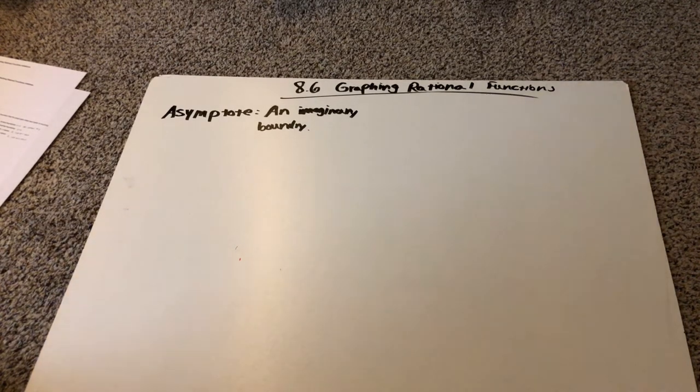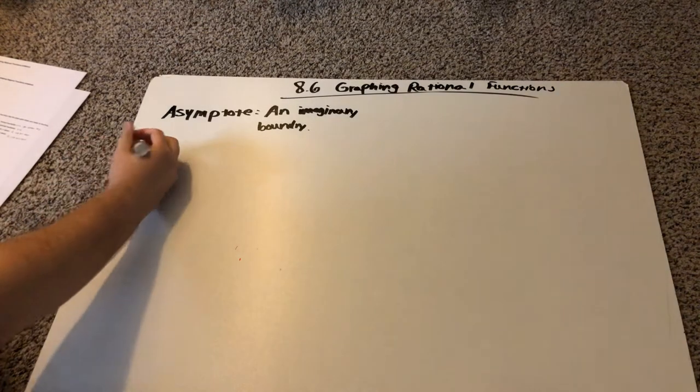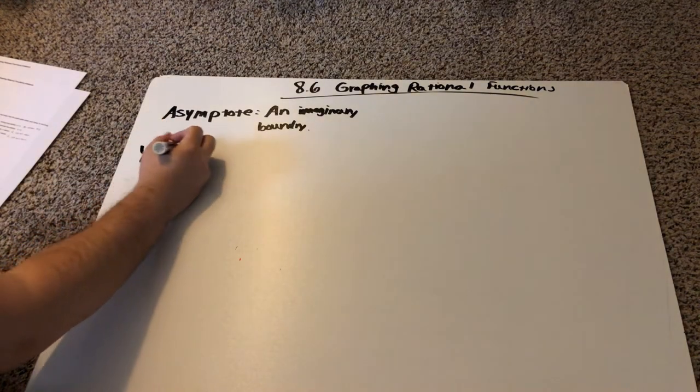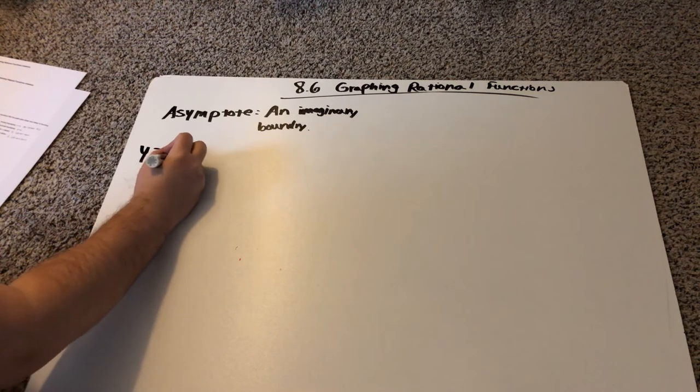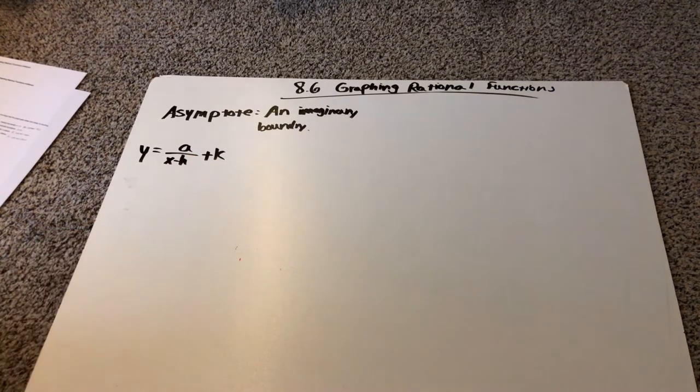So the form that we're going to have our equation is y equals a over x minus h plus k. And we also have vertical asymptotes, vertical goes up and down, and horizontal asymptotes, which go left and right.